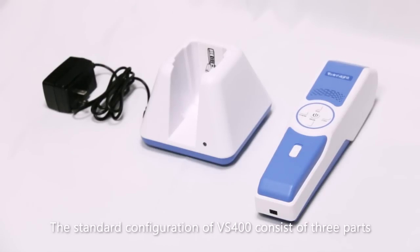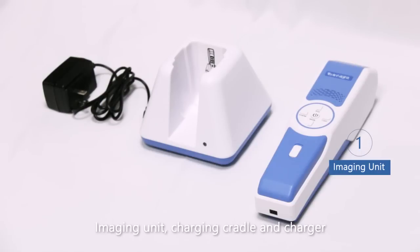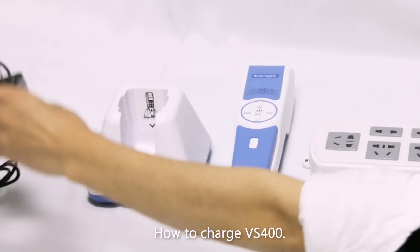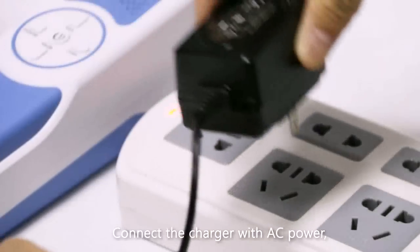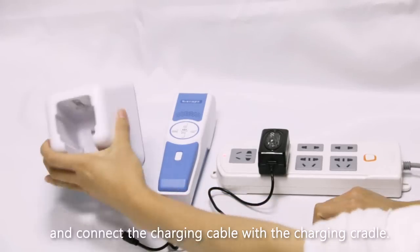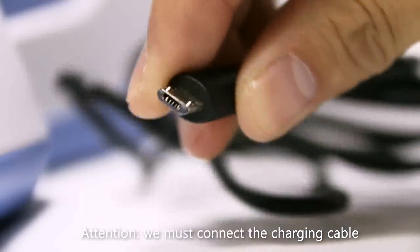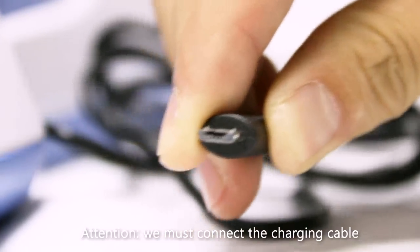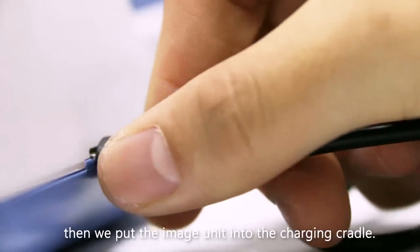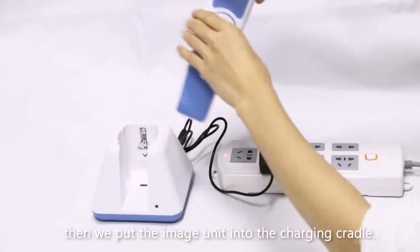The standard configuration of VS 400 consists of three parts: imaging unit, charging cradle, and charger. To charge VS 400, connect the charger with AC power and connect the charging cable with the charging cradle. Attention: we must connect the charging cable with the charging cradle only in this direction.